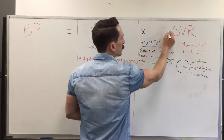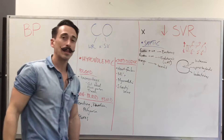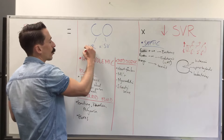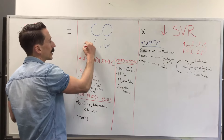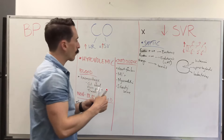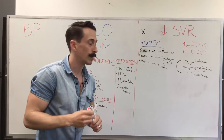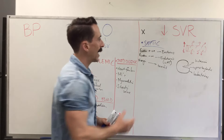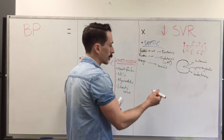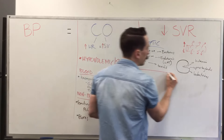This means systemic vascular resistance in septic shock decreases. The compensatory mechanism involves trying to increase heart rate and stroke volume, so heart rate may start to increase in these individuals. Treatment is antibiotics if it's a bacterially induced case.